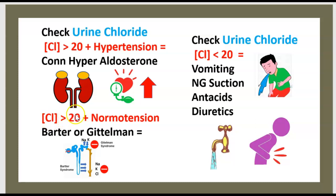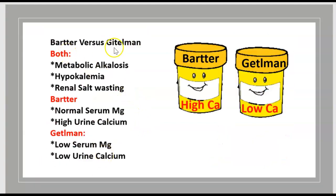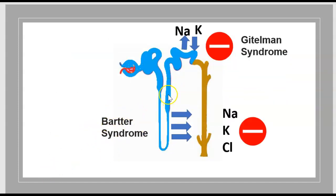If chloride is over 20 and blood pressure is normal, think about Bartter or Gitelman syndrome. The difference: Bartter syndrome is associated with high calcium in the urine, while Gitelman syndrome is associated with low calcium in the urine. Bartter syndrome involves the ascending limb of the loop of Henle, whereas Gitelman syndrome involves the distal tubule.